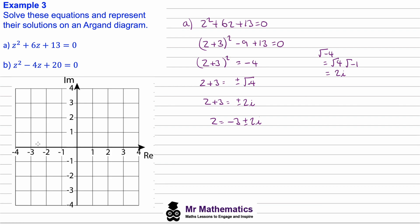We can now show this on our Argand diagram: negative 3 on the real axis and positive 2i on the imaginary axis, giving z equals negative 3 plus 2i. Our other solution is negative 3 minus 2i, which is the complex conjugate z star. Notice that z and its complex conjugate are reflected in the real axis — this will always be the case for complex roots of quadratic equations.